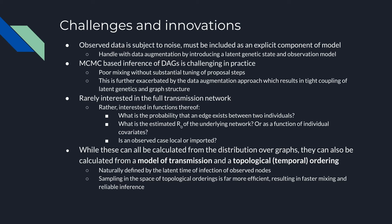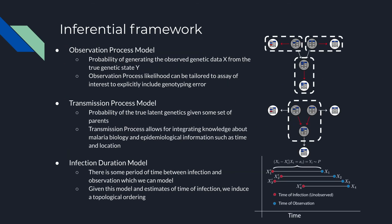However, we observe that we are rarely interested in the full transmission network, but rather in quantities such as the probability of an edge existing between two nodes, or whether an observed case is locally acquired or represents an importation event. While these can be derived from the distribution over transmission networks, they can also be calculated from a model of transmission and a topological ordering. This reparameterization of the model, in terms of topological ordering, results in faster mixing and reliable inference.